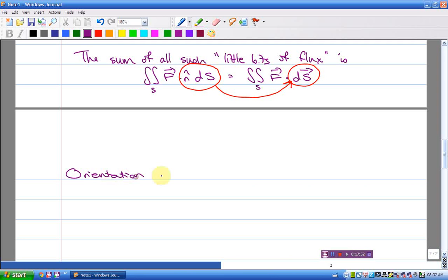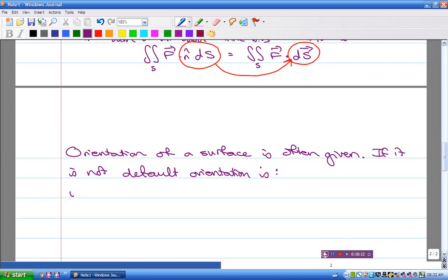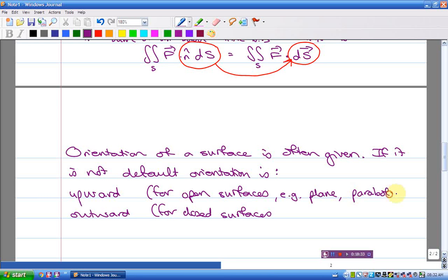Orientation of a surface is often given. If it is not, default orientation is colon upward for open surfaces, outward for closed surfaces. E.g. plane, paraboloid. E.g. sphere.